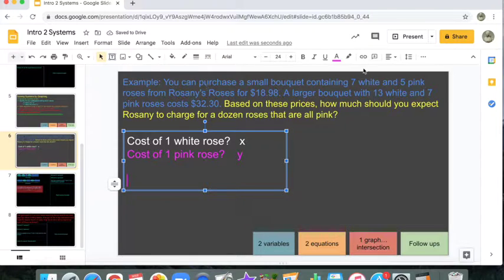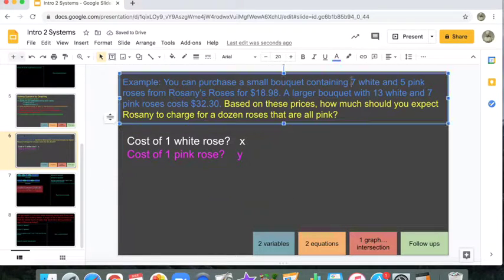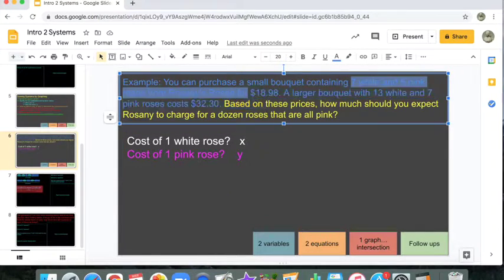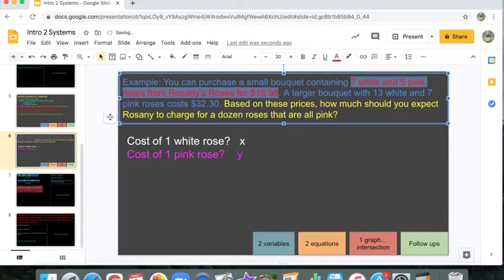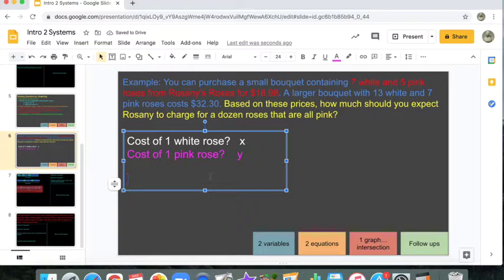Two equations. Our scenario will build our equations for us. We got this in red. Seven times the cost of a white rose plus five times the cost of a pink rose should give me 18.98. Seven X's plus five Y's equals 18.98.